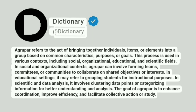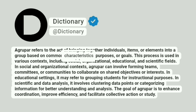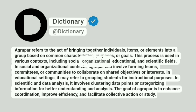Dictionary. A grouper refers to the act of bringing together individuals, items, or elements into a group based on common characteristics, purposes, or goals. This process is used in various contexts, including social, organizational, educational, and scientific fields.